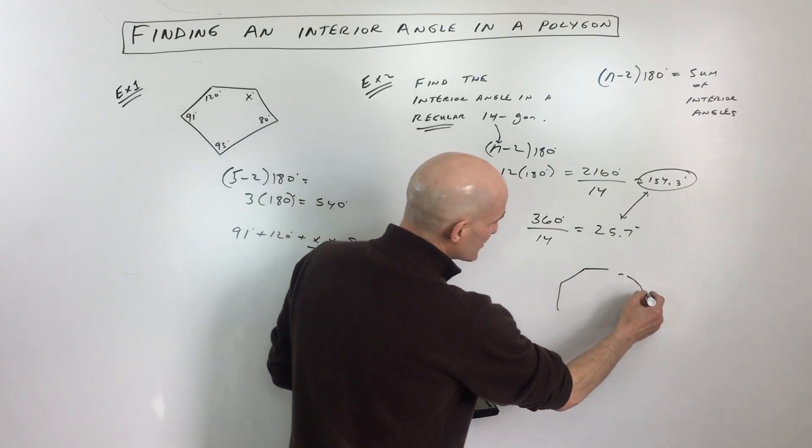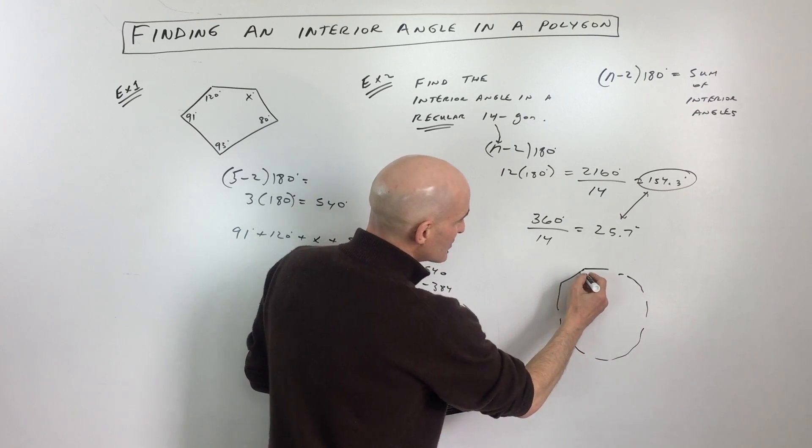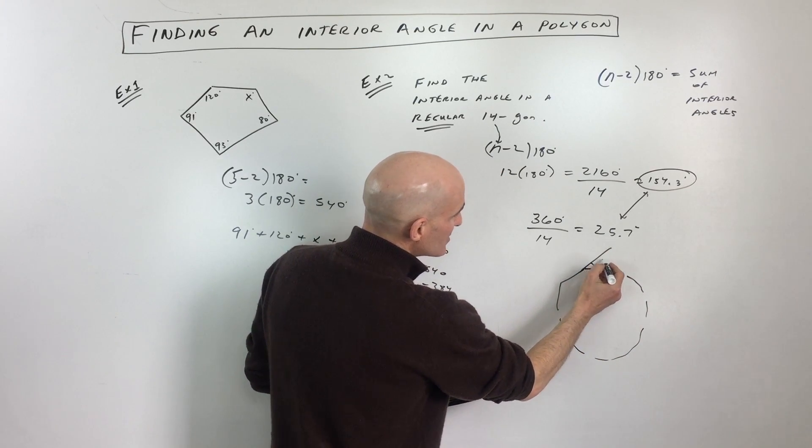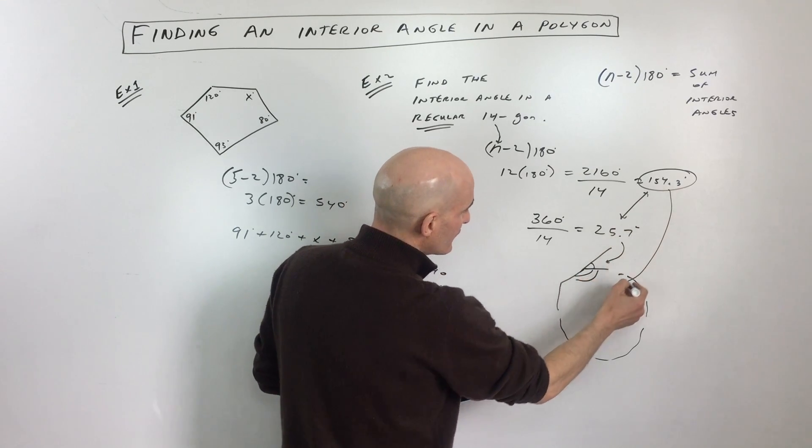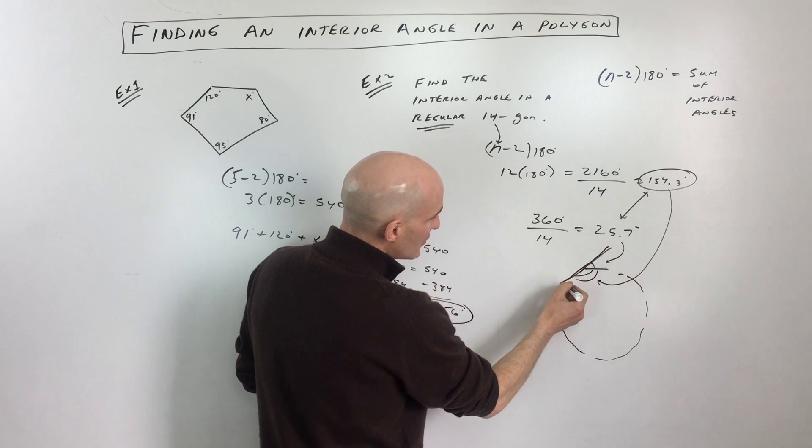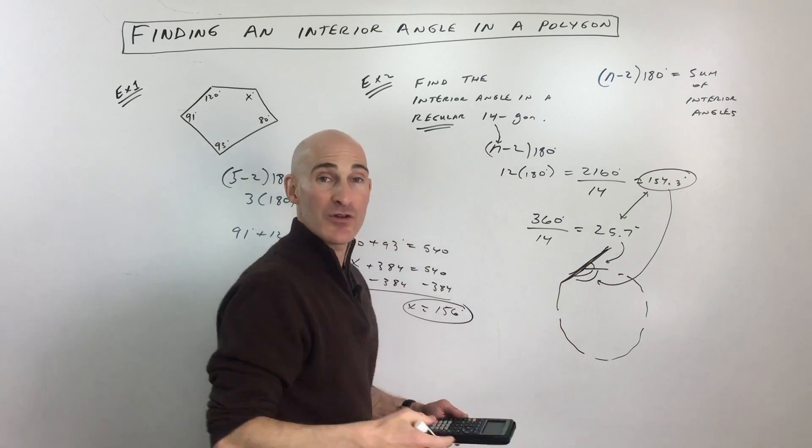But let's just pretend like it looks something like this. If you extend one of those sides, that's your exterior angle right there, 25.7, but your interior angle, 154.3, these are going to form a straight line. They're going to be supplementary. They're a linear pair.